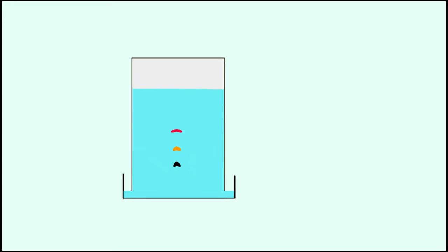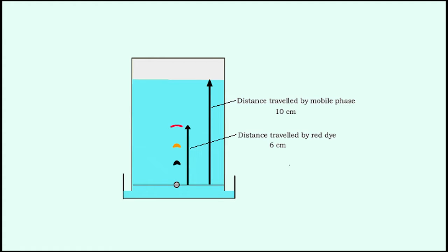The mobile phase travels up the plate by capillary force and sample components migrate varying distances based on their different affinity for the stationary and mobile phase. When the solvent reaches the top of the plate, the plate is removed from the developing chamber and dried. The separated components appear as spots on the plate and the retention factor of each component is assessed.